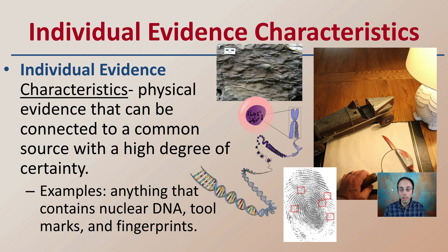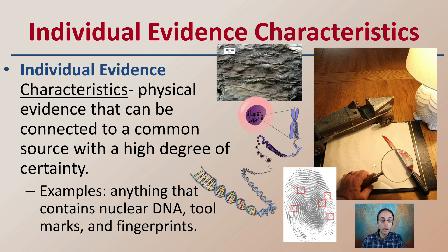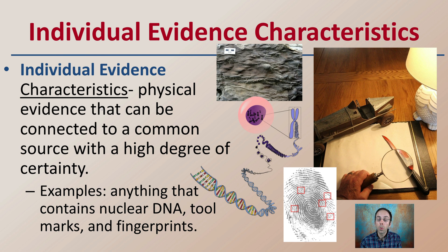In contrast, when we have individual evidence, the characteristics are that it is physical evidence that can be connected to a common source with a high degree of certainty. Anything that contains nuclear DNA, tool marks, and fingerprints can fall under the category of individual evidence, because we're able to eliminate far more potential suspects and get, ideally, to that single person.